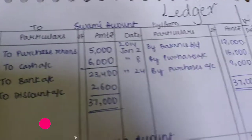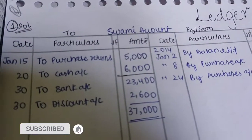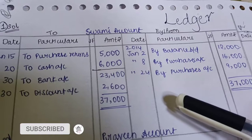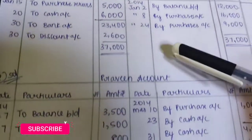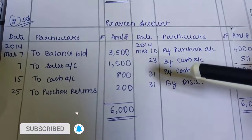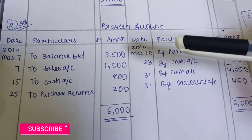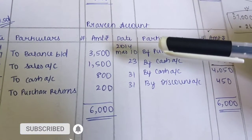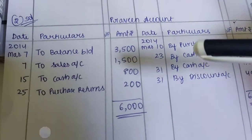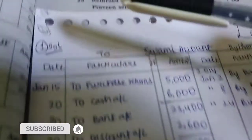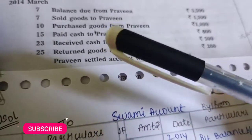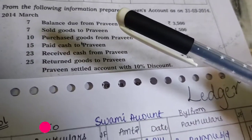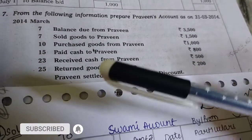I will do a separate video with one of the model questions I will discuss in detail. Now my model question is here. Let us read out first: from the following transactions, prepare Praveen account as on 31st March 2014.